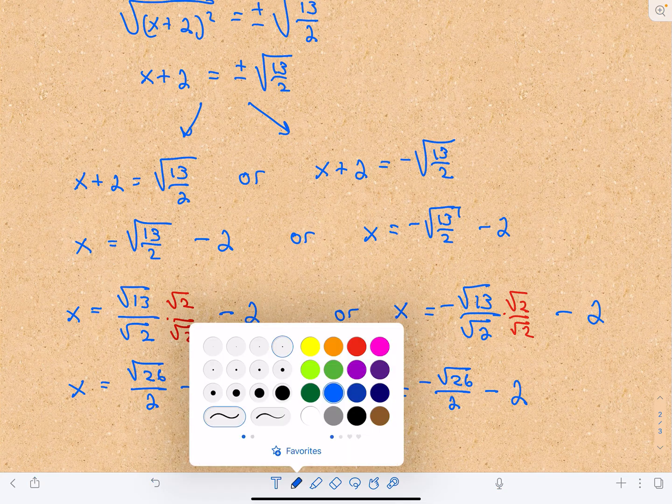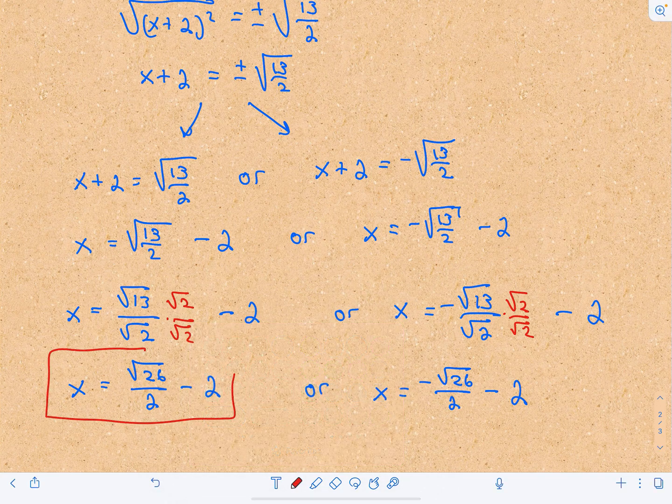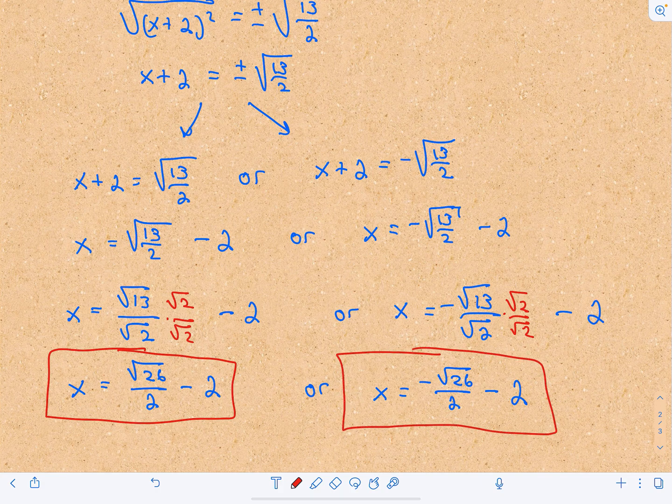Recall that a quadratic equation can have 0, 1, or 2 solutions. In this case we have two distinct solutions.